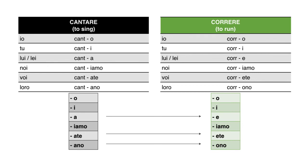If you think about it this way, you actually don't have to learn a lot of new things to conjugate the ERE verbs. You already know the steps: get rid of the last three letters, use the stem throughout, and add the endings. You also know a very similar set of endings. The only thing you have to learn is three new endings: -e instead of -a for lui/lei; -ete instead of -ate for voi; -ono instead of -ano for loro.